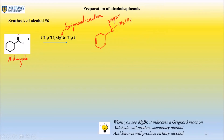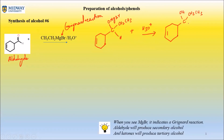The O gets attached to the MgBr. Please don't write it as CH₃CH₂ — that's wrong because carbon cannot have five bonds. Write it as CH₂CH₃. Then you add H₃O⁺, which means we're going to end up with an alcohol. So there we go — that's a secondary alcohol.